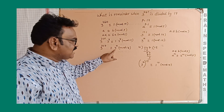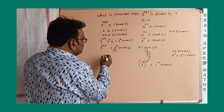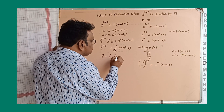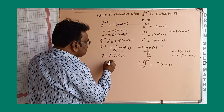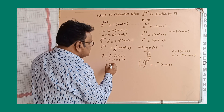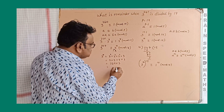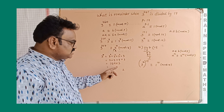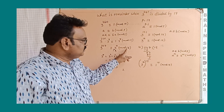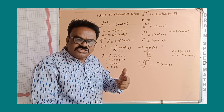But this value — 3 to the power of 7 — is the remainder, and it may be more than 17, so we need to evaluate it. 3 to the power of 7 equals 3 squared times 3 squared times 3 squared times 3, which is 9 × 9 × 9 × 3. That gives 81 × 27, which equals 2187. So 3 to the power of 7 is 2187.